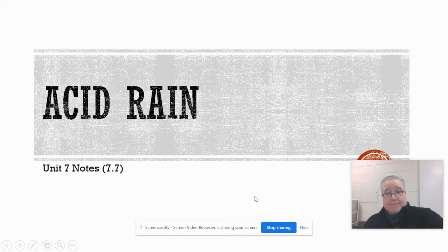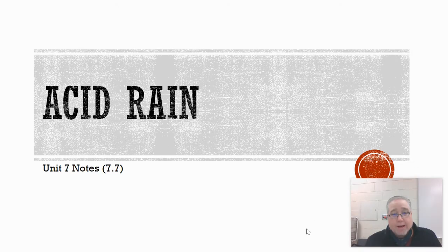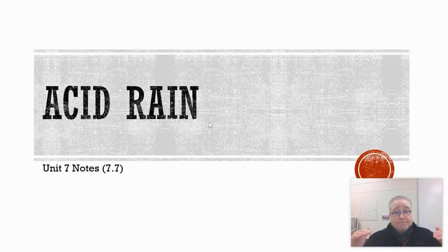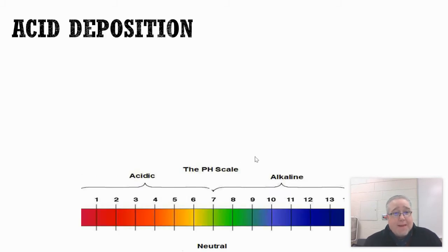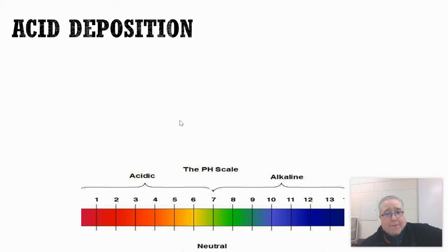All right, AP Environmental. This is a quick topic today — I want to just quickly go through acid rain with you. This is topic 7.7. I've been talking a little bit about acid rain the last couple of days in my lectures, discussing what particular pollutants can cause acid rain. Today I want to go through some of the issues with acid rain. We call it acid deposition — it's the same thing.